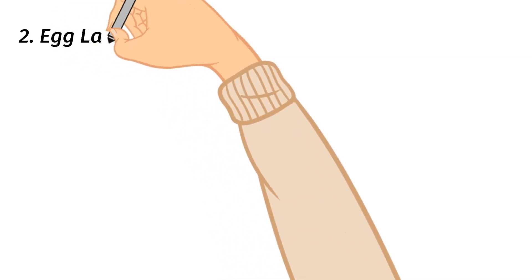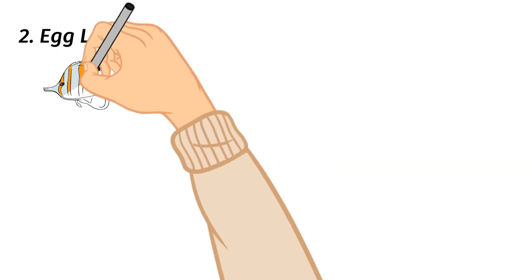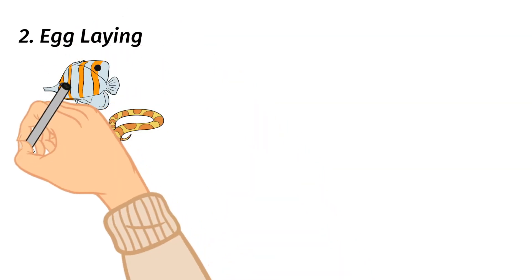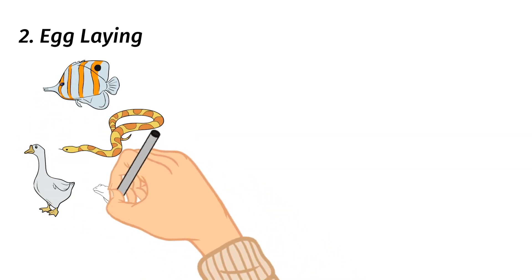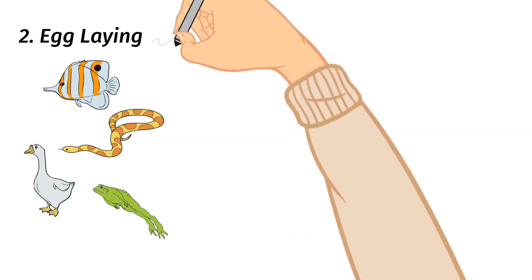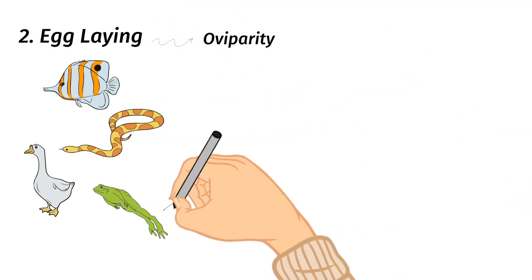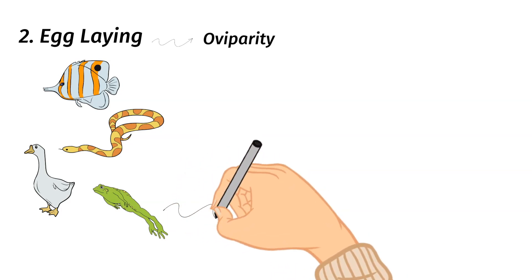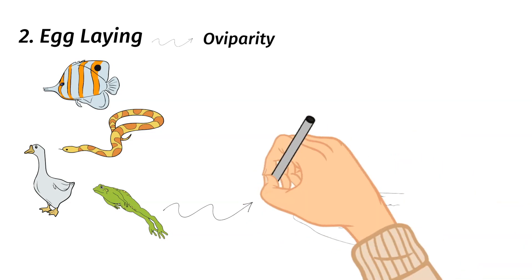Besides live birth, there is another type of sexual reproduction where the offspring still has two parents, and that is through laying eggs. Animals that lay eggs include fish, reptiles, birds, and amphibians. This is called oviparity. There are differences in the way that some of these animals lay eggs.